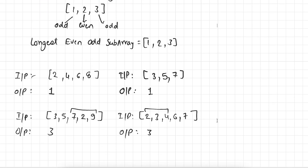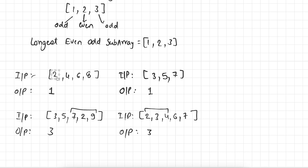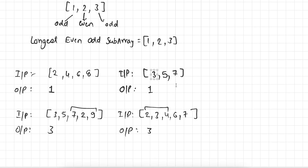So let's understand this problem with a few examples. Here we have array 2, 4, 6, 8 and you can see that all elements are even. So the longest even-odd subarray of this array is going to be only 1, because all the elements are subarrays in themselves. Other than that we do not find any longer even-odd subarray. Similarly, here we have 3, 5, 7 and all these numbers are odd, so the longest even-odd subarray is 1 as well.